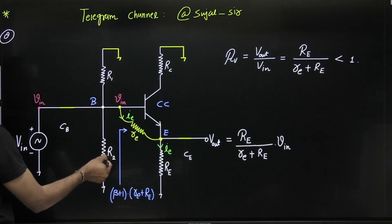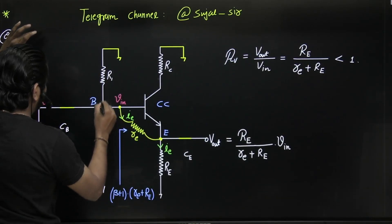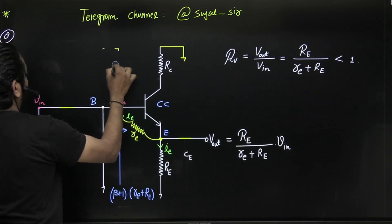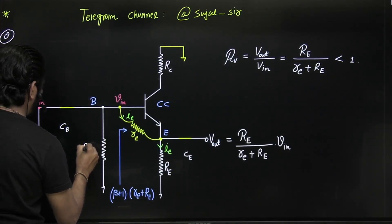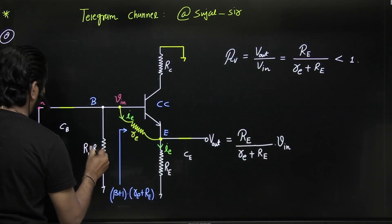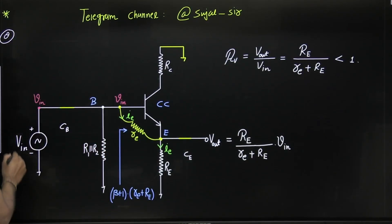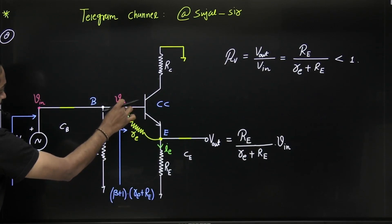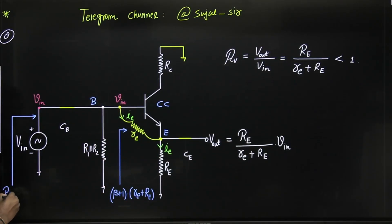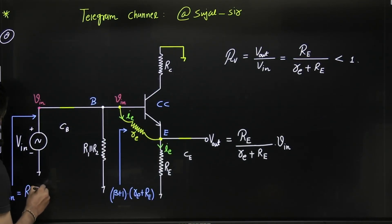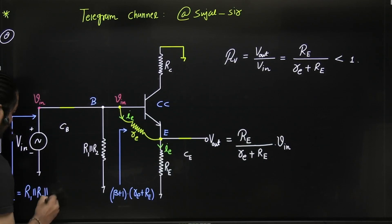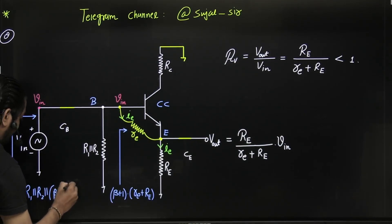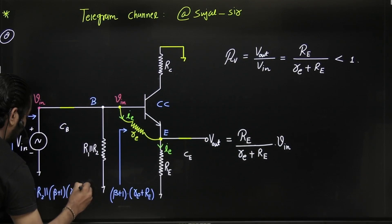R1 and R2 are connected in parallel. The equivalent resistance seen from the source side is: R1 parallel R2, and this resistance is between base and ground. So the total input resistance seen from the source side is R1 ∥ R2 ∥ [(beta + 1)(small re + capital RE)].